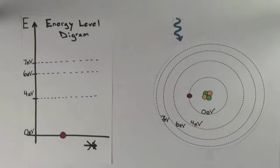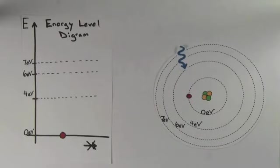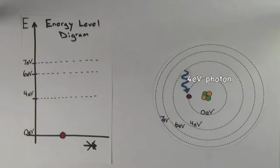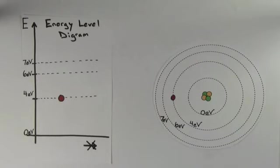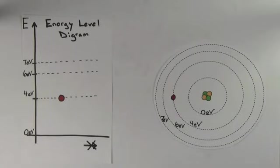The electron in this ground state needs 4 eV to jump to the next energy level. That means if a photon that had an energy of 4 eV came in and struck the electron, the electron would absorb the energy of the photon, causing the photon to disappear, and that electron would jump up to the next energy level. We call the first energy level after the ground state the first excited state.